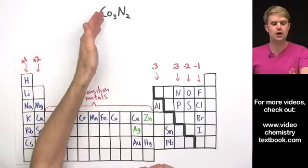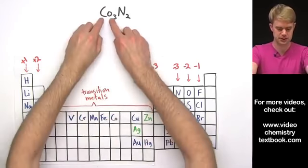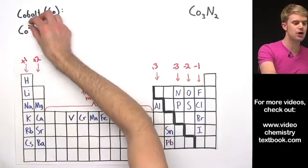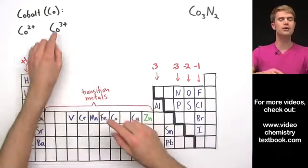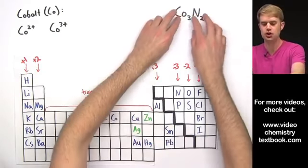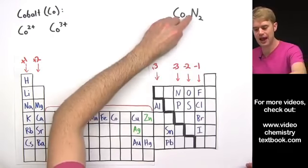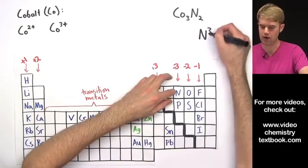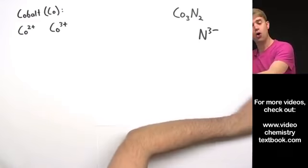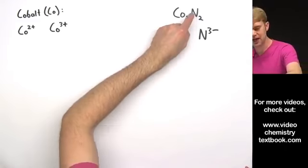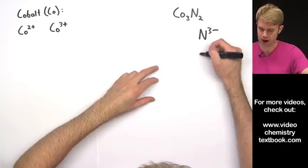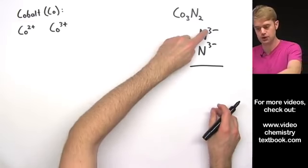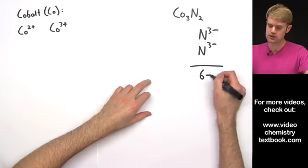Let's do a couple more: Co₃N₂. Co here is cobalt, and cobalt can make 2 different ions: Co²⁺ and Co³⁺. We'll focus in on N, which is in the column where its charge in an ionic compound is always N³⁻. N₂ means we have two of these, so our total negative charge is 3- plus 3-, which gives us 6-.